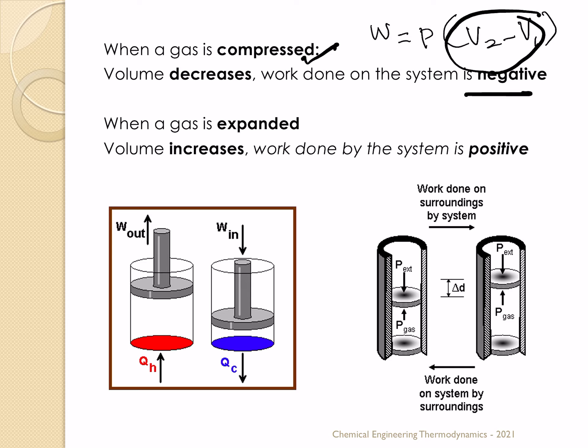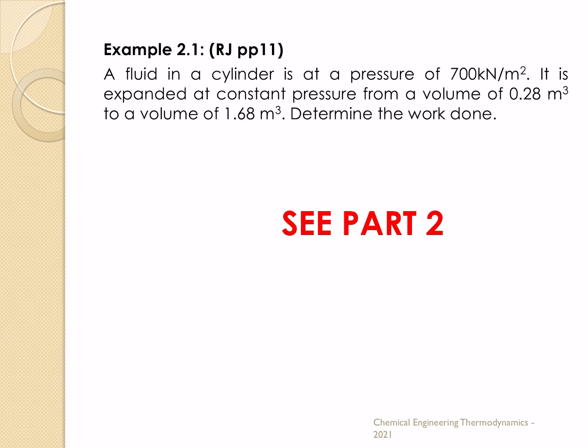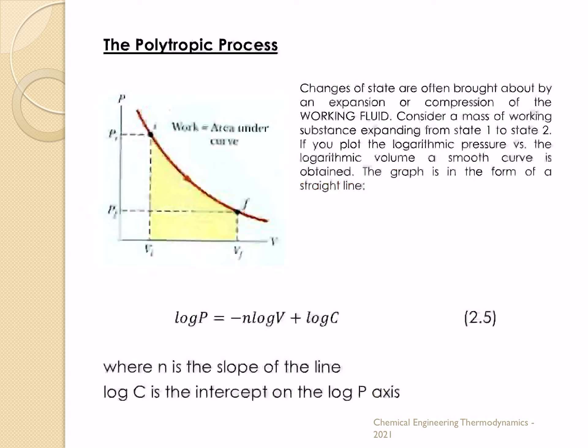The pressure-volume relationship is represented using what we call the PV diagram. The area under the curve describes the work done. We'll be solving an example to consolidate this theory in part two, so please watch out for the other recording. Having said that, we've seen the isobaric process and work done in it, but we have another process called the polytropic process.